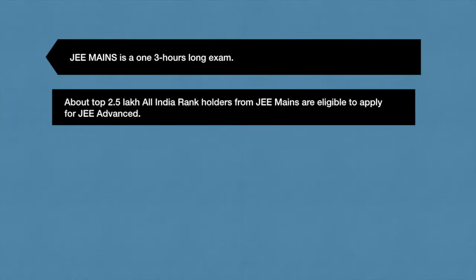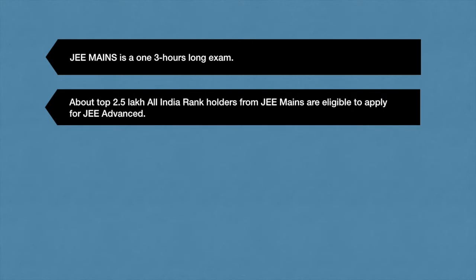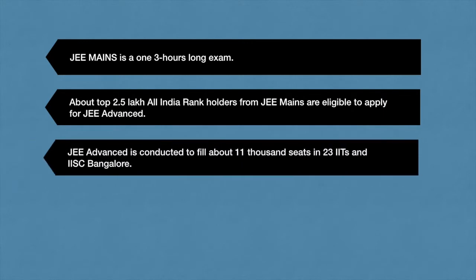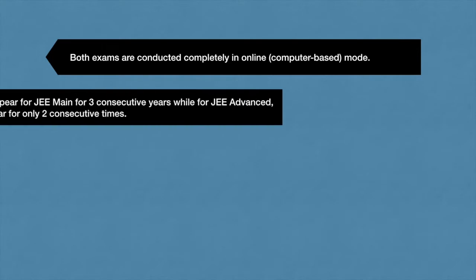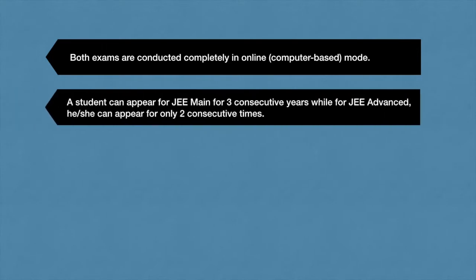Here are some facts about the exam. JEE Mains is a three-hour exam. About 2.5 lakh top rank holders from JEE Mains are eligible to apply for JEE Advanced. JEE Advanced is conducted to fill about 11,000 seats in 23 IITs and IISc Bangalore. JEE Advanced has two three-hour exams — Paper 1 starts at 9 a.m. and ends at 12 noon, and Paper 2 is from 2:30 to 5:30 p.m. Both exams are conducted completely online. A student can appear for JEE Mains for three consecutive years, while for JEE Advanced only two consecutive times.